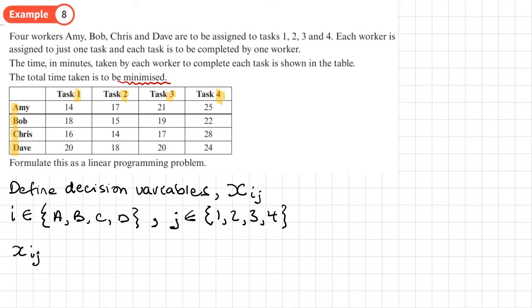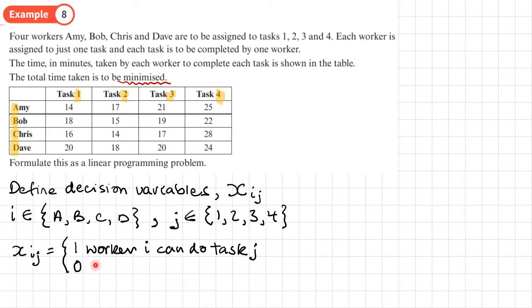We set up the binary coding as a piecewise function: if X sub I J equals 1, we can allocate worker I to task J; and if it equals 0 — otherwise — worker I cannot do task J.